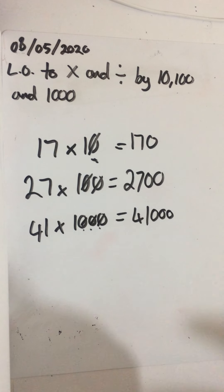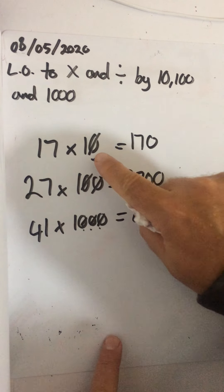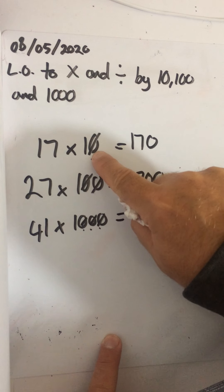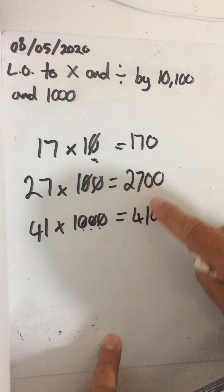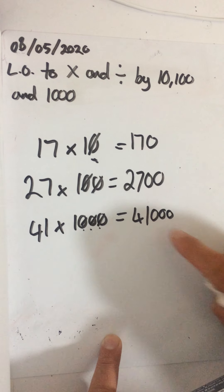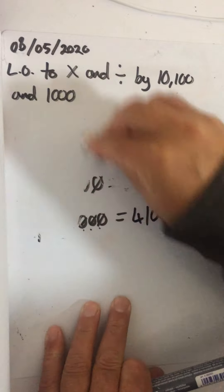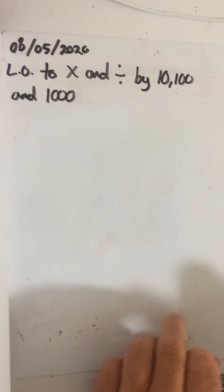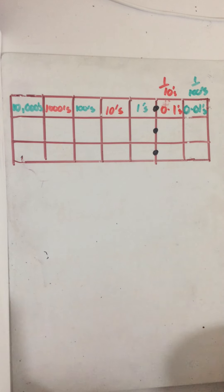So multiplying is easy when it's with whole numbers. You add a zero for however many zeros — one zero in 10, so you add 1; two zeros in 100, you add 2; three zeros in 1,000, you add 3. It gets a bit trickier though when it comes to multiplying and dividing when decimals are involved.